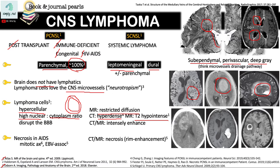Lymphoma also has the capacity to disrupt the blood-brain barrier. Because of this disruption, the contrast is now able to enter the brain and produce enhancement on CT and MRI. Here, we have enhancing masses in the periventricular region.